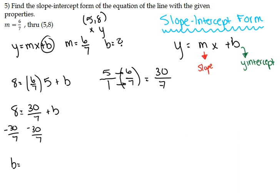When we subtract 30 over 7 from 8, we want to get a common denominator for the 8. We know that it's actually over 1, and we want to get it to a denominator 7. So we're going to multiply both the numerator and the denominator by 7, which will get us 56 divided by 7.